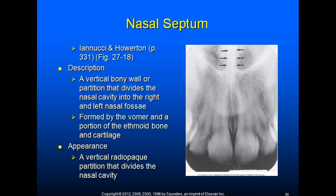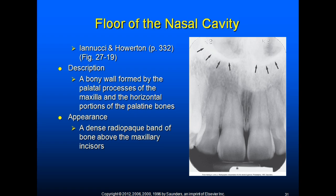The nasal septum is a vertical bony wall or partition that divides the nasal cavity into the right and left nasal fossae. Formed by the vomer and a portion of the ethmoid bone and cartilage, it appears as a vertical radiopaque partition dividing the nasal cavity. The floor of the nasal cavity is composed of dense cortical bone and appears as a dense radiopaque band of bone above the maxillary incisors.